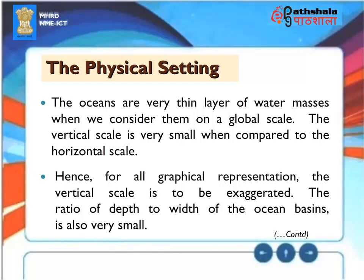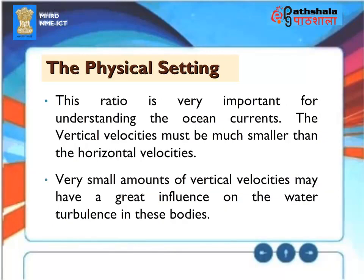The Physical Setting. The oceans are a very thin layer of water masses when we consider them on a global scale. The vertical scale is very small when compared to the horizontal scale. Hence, for all graphical representation, the vertical scale is to be exaggerated. The ratio of depth to width of the ocean basins is also very small. This ratio is very important for understanding the ocean currents. The vertical velocities must be much smaller than the horizontal velocities. Very small amounts of vertical velocities may have a great influence on the water turbulence in these bodies.